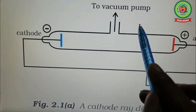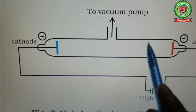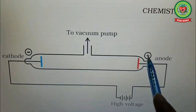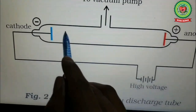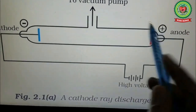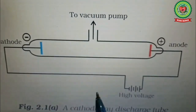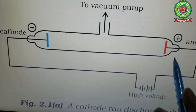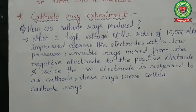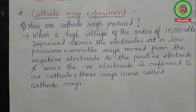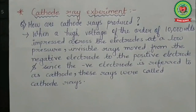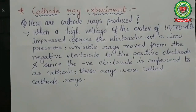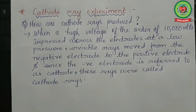Full air was removed from the discharge tube and the pressure was kept very low for cathode rays to be produced. A high voltage of about 10,000 volts was passed through it. It was found that some rays passed from cathode to anode — they were invisible. When a high voltage of the order of 10,000 volts was applied across the electrodes at low pressure, invisible rays moved from the negative electrode to the positive electrode, and since the negative electrode is referred to as cathode, the rays were called cathode rays.